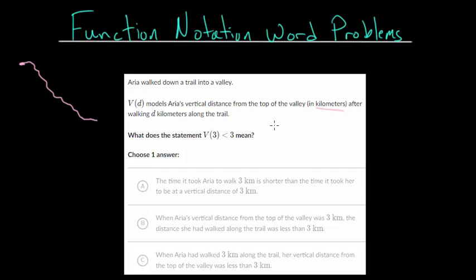So with most word problems, especially word problems that use different letters, the first thing I want to do is understand what do those letters represent. So we have this V(D) and we have D. So what do each of those mean?